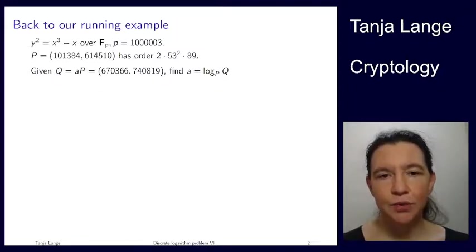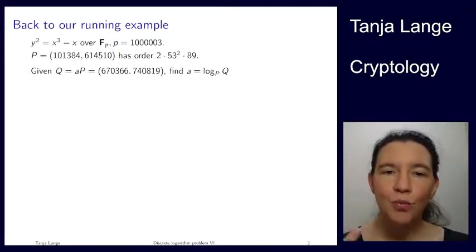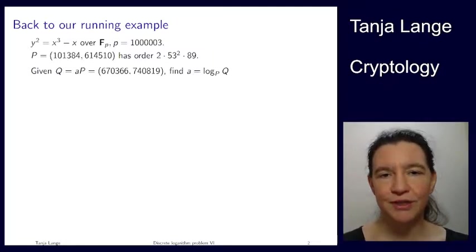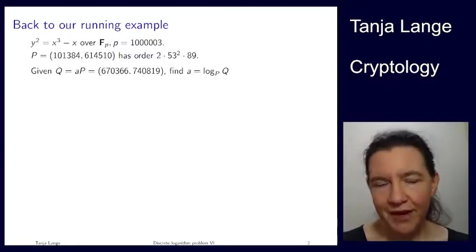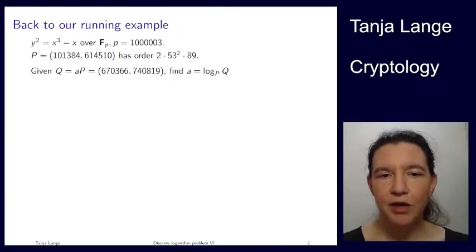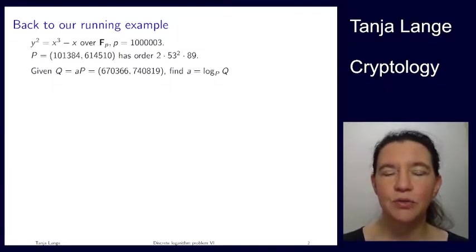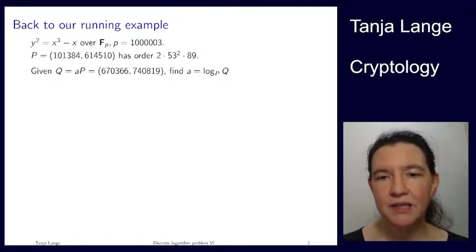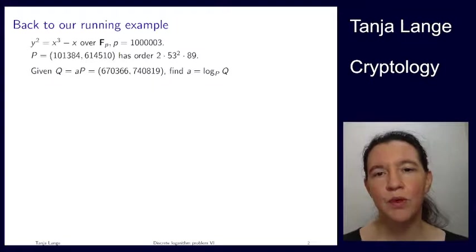Namely a base point P, which has order, well, almost the group order, almost 1,000,004, one factor of 2 was missing. And then a multiple of that, which is our discrete log challenge Q. So, we have again our protagonists P and Q, and then the request is to find a, which is the logarithm of Q with base P.